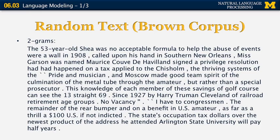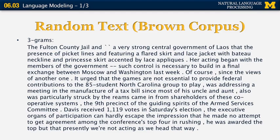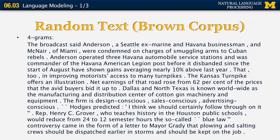We can do something similar with trigrams. In this case, the word 'county' is computed based on its probability of following 'the' and 'Fulton,' and the word 'jail' is computed based on its probability of appearing after 'Fulton' and 'county.' We can do the same for four-grams and so on. In each case, the text looks more natural because we guarantee that every consecutive sequence of four words is something that appeared in the training text.